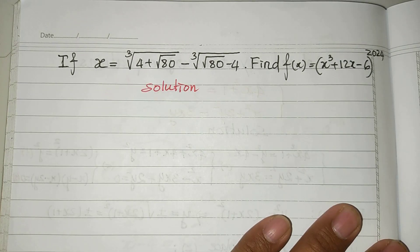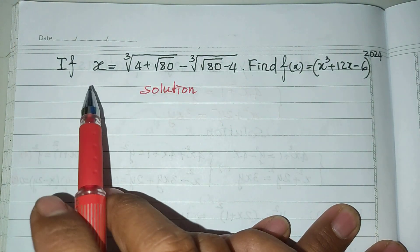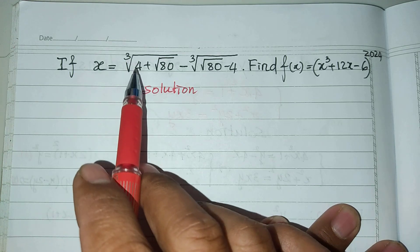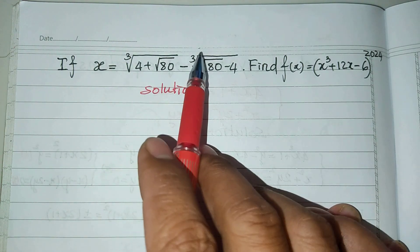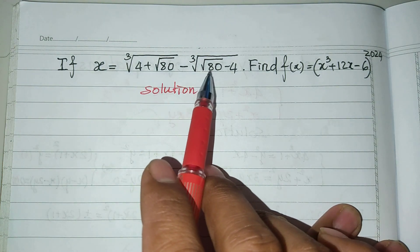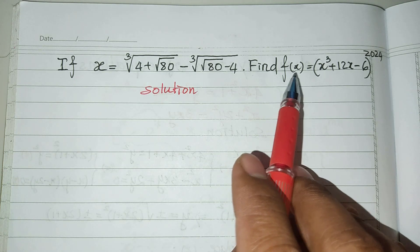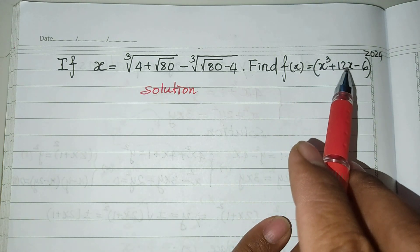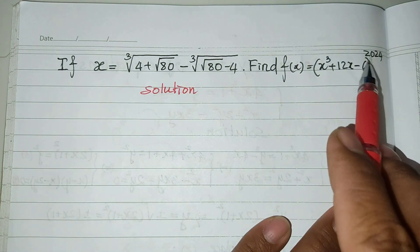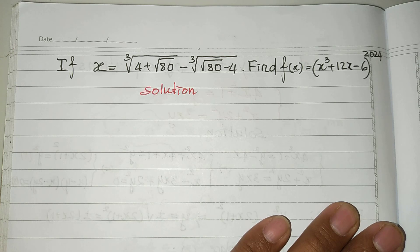Hello everyone, welcome to my YouTube channel. Today I have one exercise: if f(x) equals the cube root of (4 plus square root of 80) minus the cube root of (square root of 80 minus 4), find f(8), which equals 8 power 3 plus 12x minus 6, all raised to the power of 7, and 24. Do you know how to solve this?